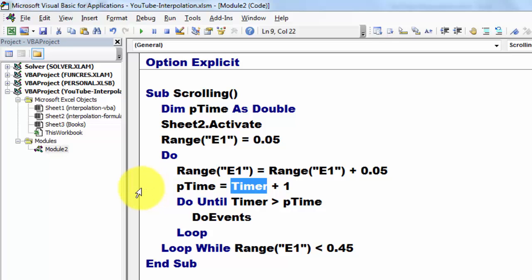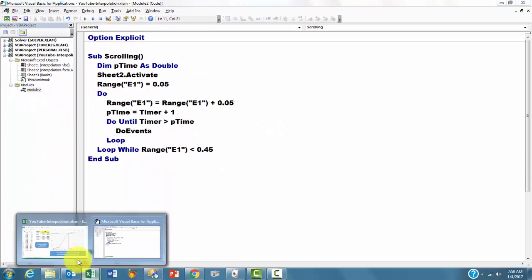But then we put a delay in there with a timer. The timer gives you the number of seconds since midnight. So I store in ptime the value of timer plus 1. Do until the timer itself, seconds since midnight, is greater than ptime. Do events, that means keep doing other things if you have to, but wait during that process. So I made a shortcut to that one.